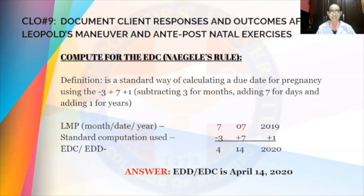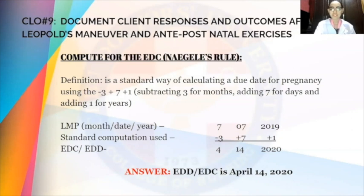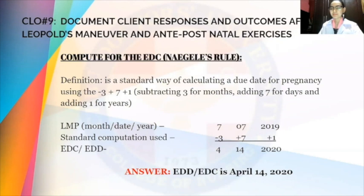We have here an example. The LMP, based on month, date, and year format, is July 7, 2019. We use it with our standard computation: minus 3 for months, plus 7 for days, and plus 1 for year. So if we solve this: 7 minus 3 is equal to 4; 7 plus 7 is equal to 14; and 2019 plus 1 is equal to 2020.